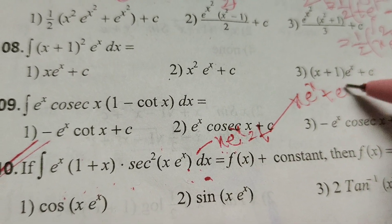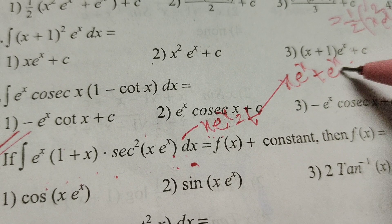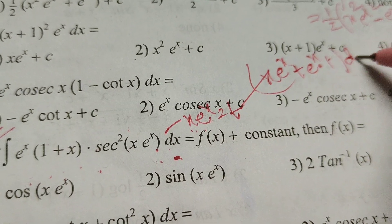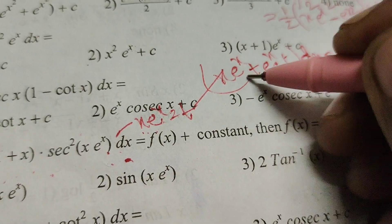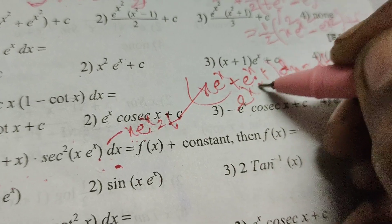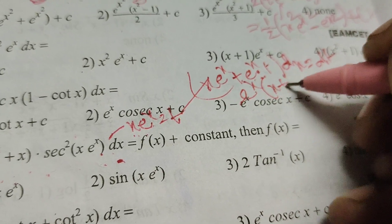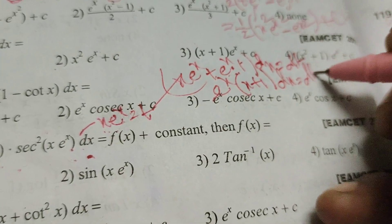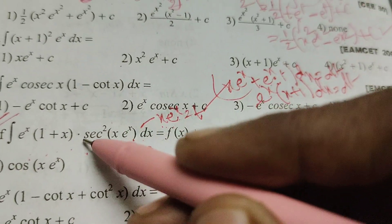Plus e^x into differentiation of x means 1, dx equals to dt. Now in these two terms, e^x is the common factor. e^x into (x plus 1) dx equals to dt.